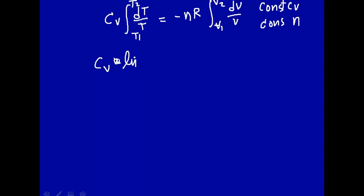is equal to minus nR times the natural log of the final volume V2 over the initial volume V1.